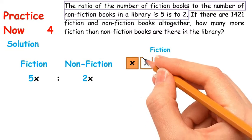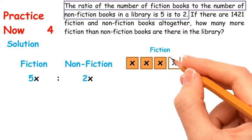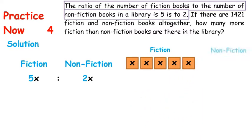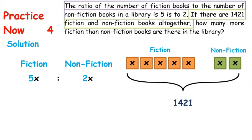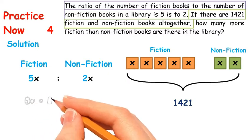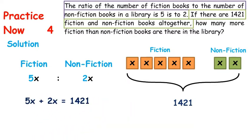We can draw a model of this ratio to form an equation. There are 1421 fiction and non-fiction books altogether. It means 5x plus 2x equals 1421.